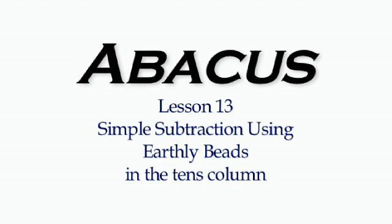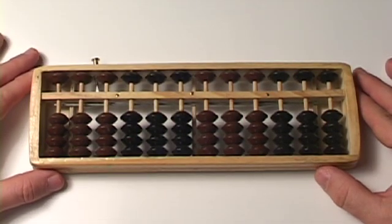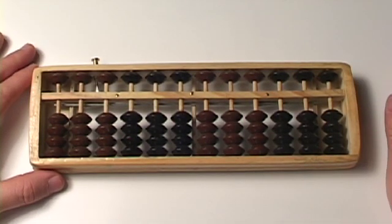In this lesson, we're doing simple subtraction without the number 5 in the tens column. So, if you're able to handle the ones column, of course you can handle the tens column. It is a piece of cake.